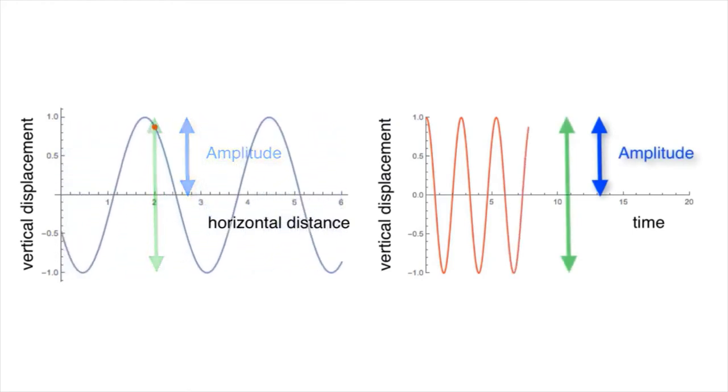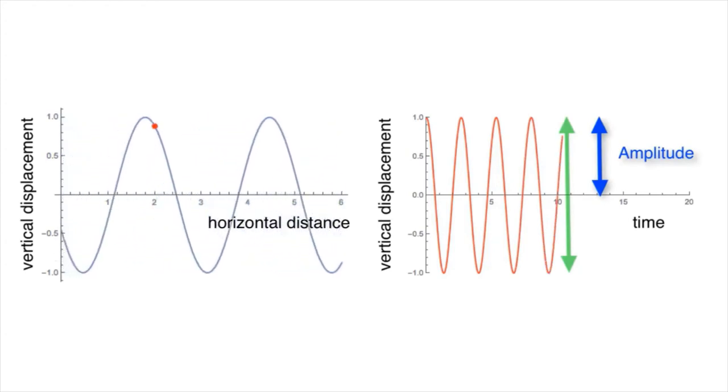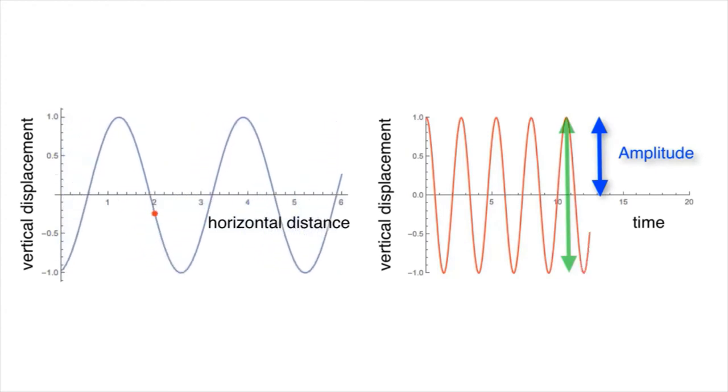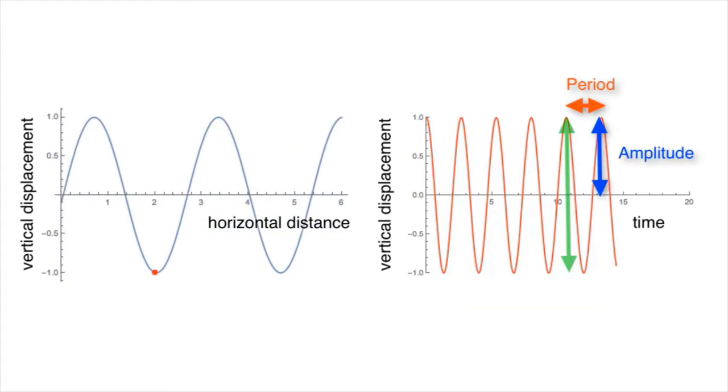And the time that it takes for a molecule to complete one full cycle, that is starting from crest, descending to the trough, and ascending to a crest is called the period of the wave. It is the time between crests in the displacement versus time plot.